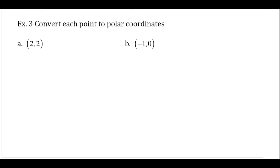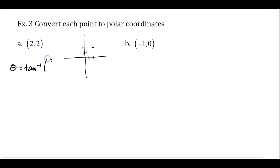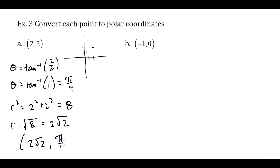Now let's convert each point to polar coordinates. For the first one, we're looking at (2, 2). The point (2, 2) is going to be along the line y equals x, so we can see this is going to be an angle of 45 degrees, which would be pi over 4. But let's show the work: theta equals tan inverse of 2 over 2, so theta equals tan inverse of 1, and we know the angle with a tangent of 1 is pi over 4. And r squared equals x squared plus y squared, which is 2 squared plus 2 squared, which is 8. So r equals the square root of 8, which is 2 root 2. So this rectangular point in polar form is (2 root 2, pi/4).